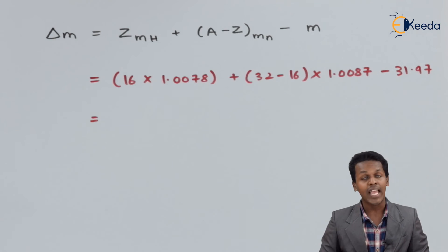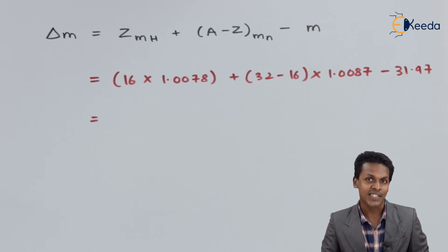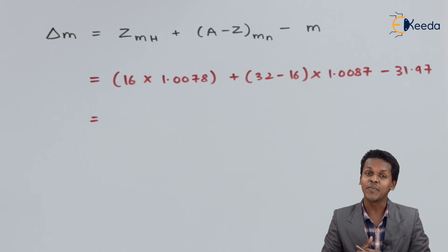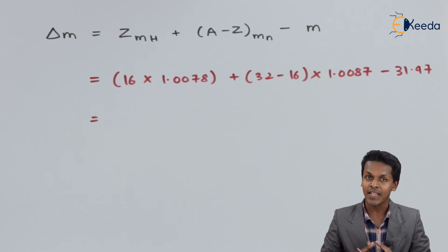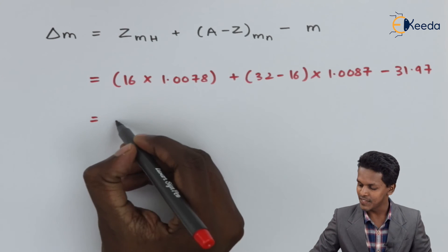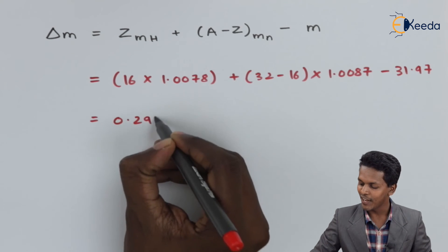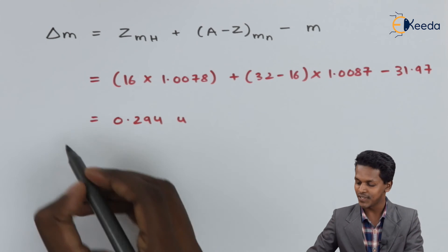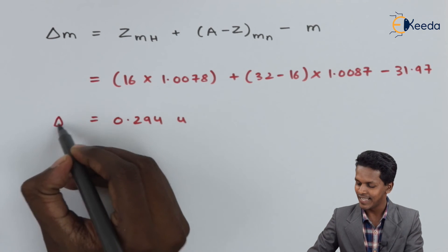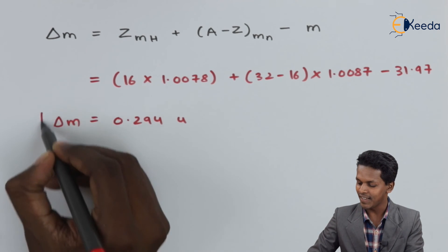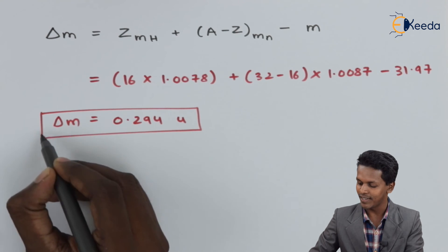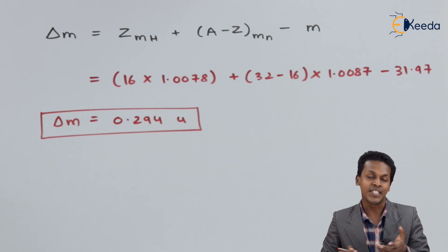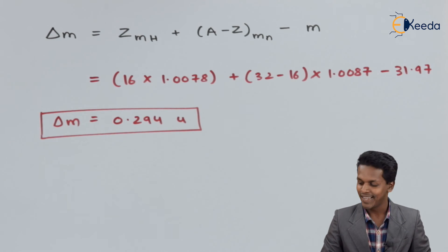Now let us calculate and see what answer we get. We have the mass defect delta M as 0.294 unified mass units. That is how we solve this problem.